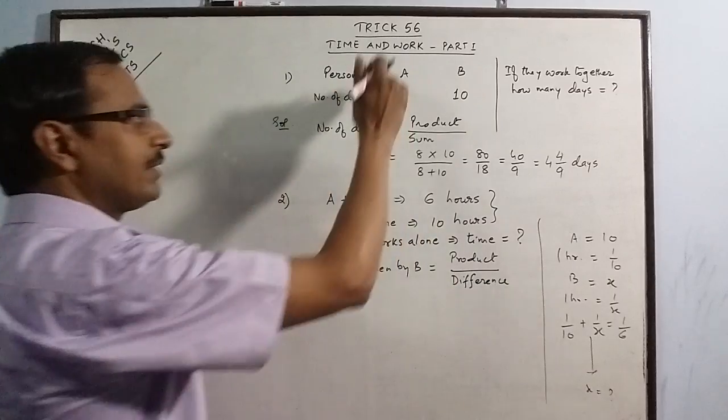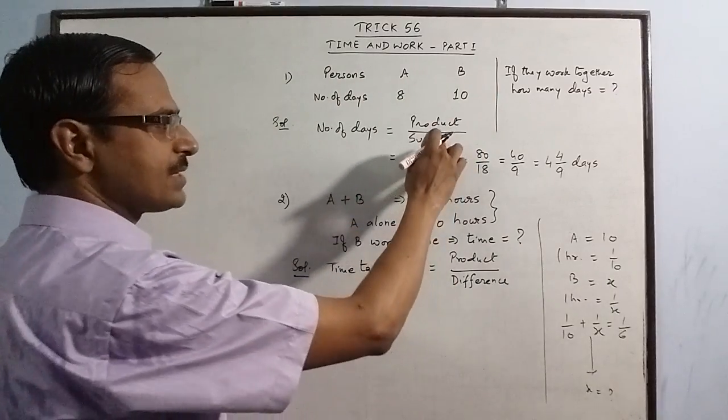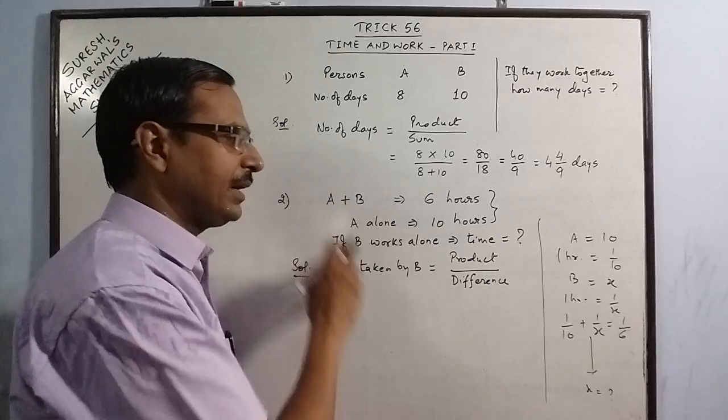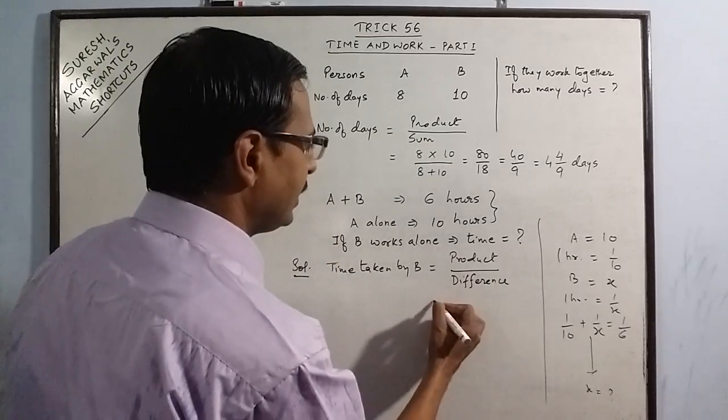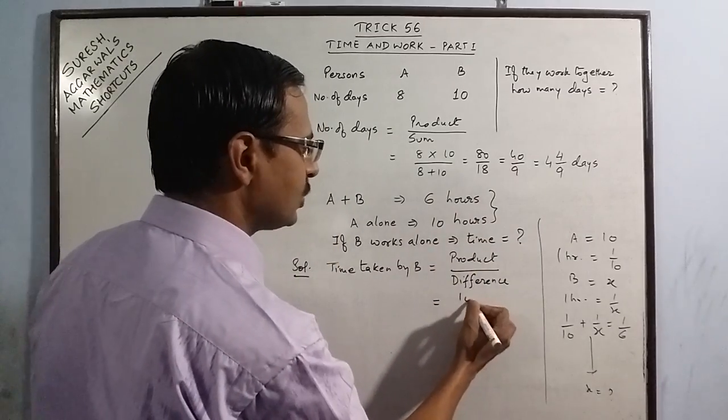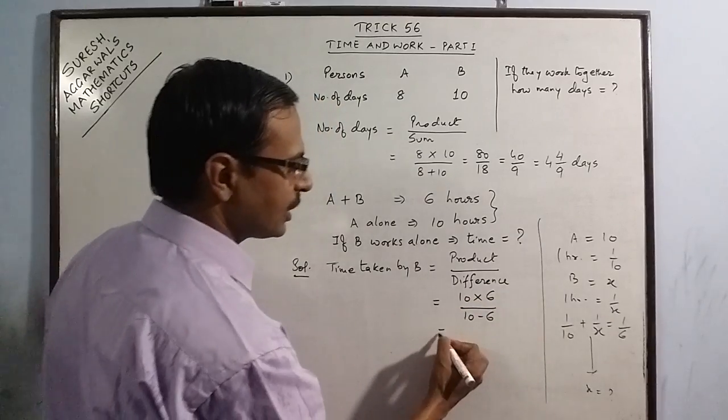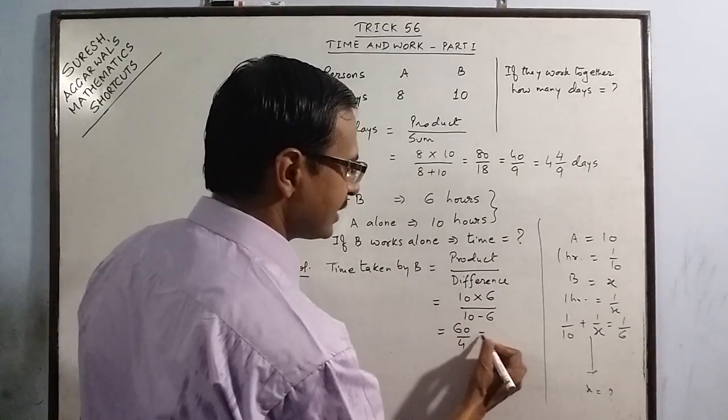Remember, when we are given individual times, we divide it by sum. When we are given time of one of the persons and the combined time, then we divide it by the difference. So here the product is 10 into 6 and the difference is 10 minus 6. So your simple result is 60 upon 4 that is 15 hours.